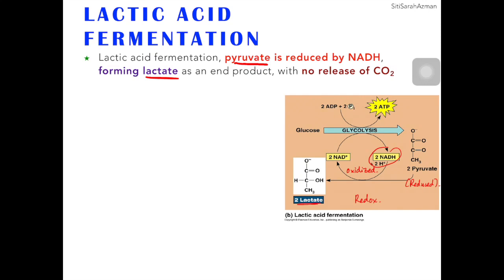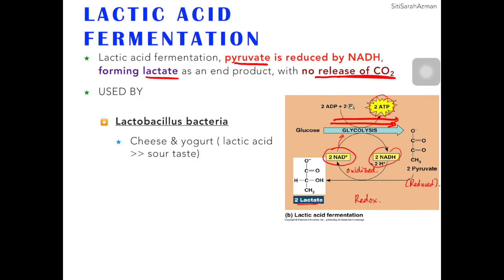Similar to alcohol fermentation, since NAD+ has been produced, it will be used to run glycolysis forward so that glycolysis can always continue. The total number of ATP generated is still 2 ATP. Another difference between alcohol fermentation and lactic acid fermentation is that there is no release of carbon dioxide. This type of fermentation is used by, for example, Lactobacillus bacteria, which perform lactic acid fermentation to produce cheese and yogurt.